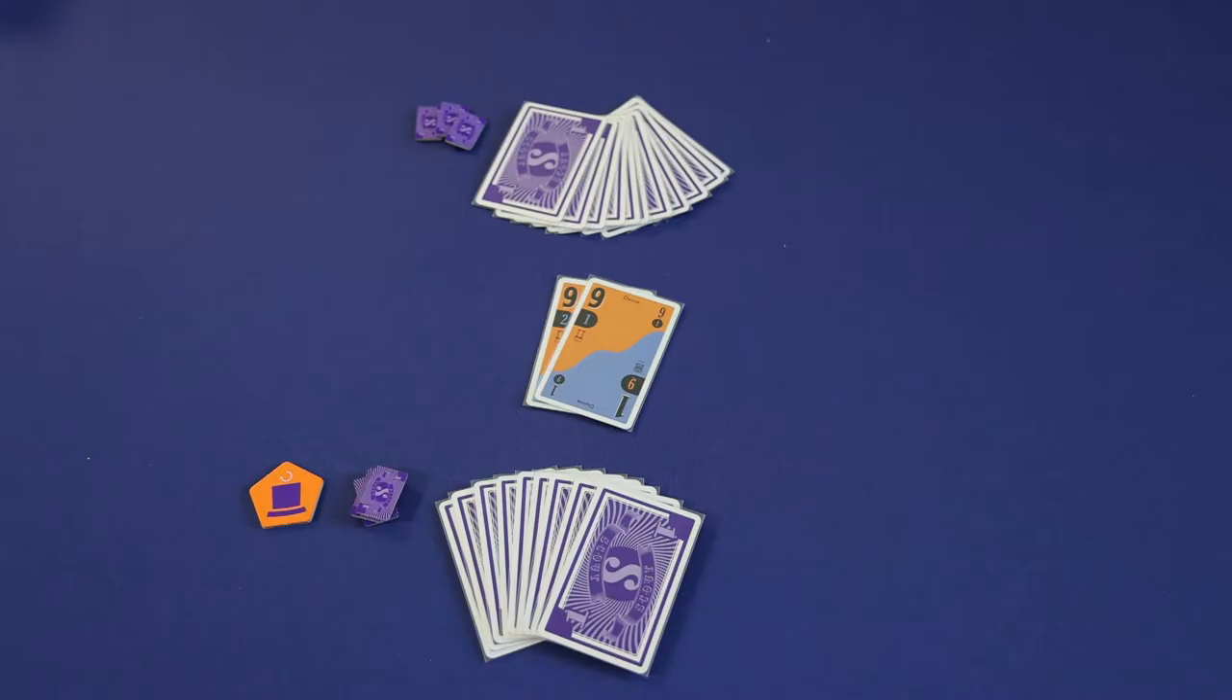The two-player game is played in exactly the same way as the three-to-five-player game of Scout, with the following changes. Players can no longer Scout and Show on their turn. And if a player does want to Scout, so for instance if this player wanted to take one of these 9s, they would have to put one of their three Scout chips in the middle of the table to be able to do that.